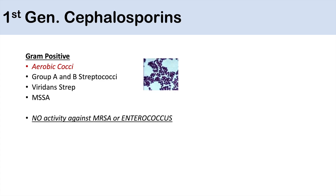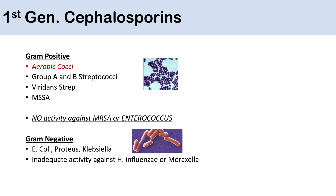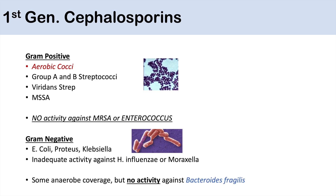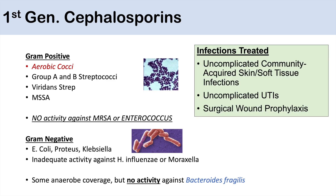First-generation cephalosporins do not have activity against MRSA or enterococcus. They do have some coverage for gram-negative bacteria including E. coli, Proteus, and Klebsiella, but inadequate activity against Haemophilus influenzae or Moraxella catarrhalis. They have some anaerobic coverage but no activity against Bacteroides fragilis. Infections treated include uncomplicated community-acquired skin and soft tissue infections (where MRSA is not a concern), uncomplicated UTIs, and surgical wound prophylaxis.